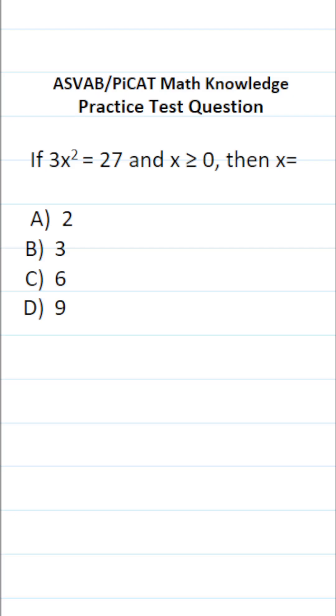This math knowledge practice test question for the ASVAB and PICAT says if 3x squared equals 27 and x is greater than or equal to zero, then x equals.